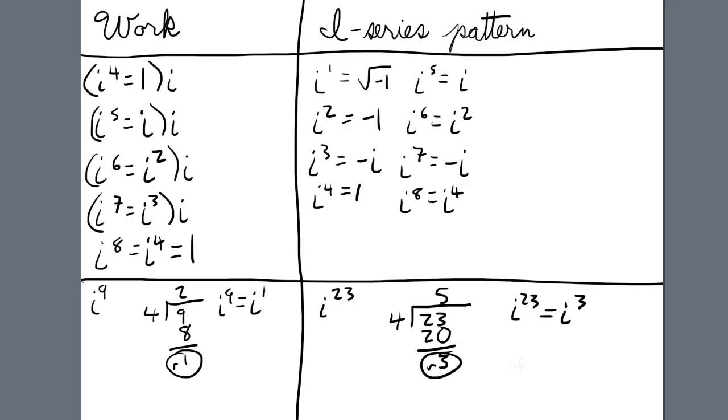Now if you have a number that's completely divisible by four without a remainder, for instance i to the fortieth, that will be equivalent to one. So any multiple of four, i powers to the multiple of four, will be equivalent to one.